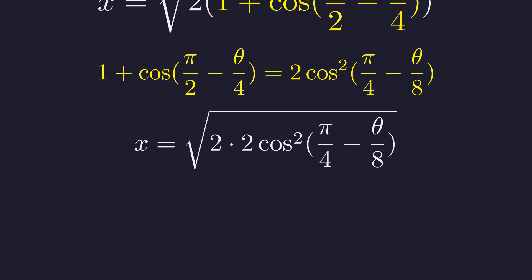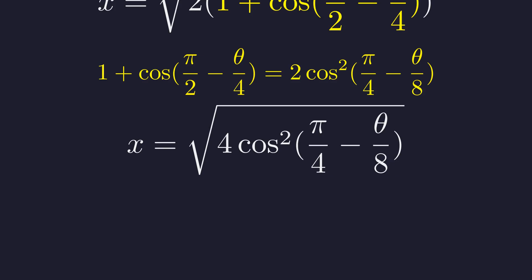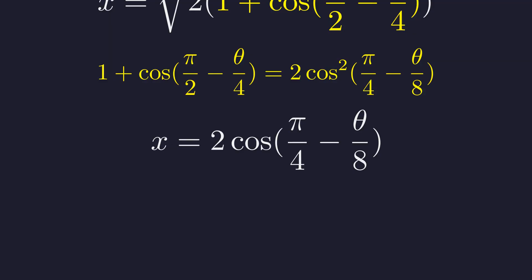Substituting the identity, we get the square root of 2 times 2 cosine squared of π over 4 minus θ over 8. Multiplying 2 times 2 gives us 4. The argument inside this cosine is also in the first quadrant, so the square root simplifies cleanly and the entire nested radical collapses to this single beautiful term.